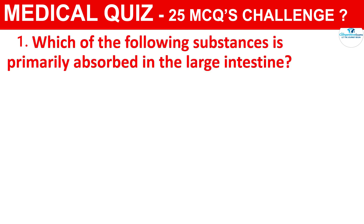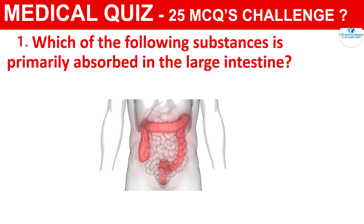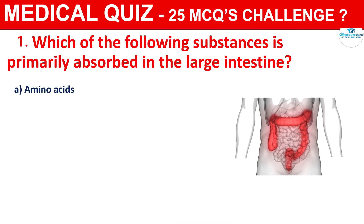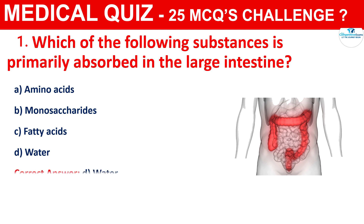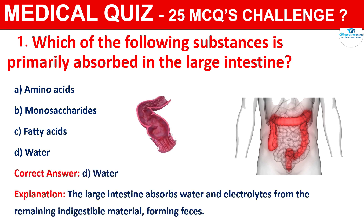Question 1: Which of the following substances is primarily absorbed in the large intestine? Your options are Amino Acids, Monosaccharides, Fatty Acids, or Water. The correct answer is D, i.e., Water. The large intestine absorbs water and electrolytes from the remaining indigestible material, forming feces.